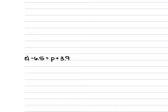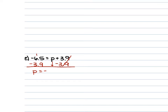For E, we have negative 6.5 is equal to P plus 3.9. To get P by itself, we subtract 3.9 from each side. P drops down and we do negative 6.5 minus 3.9, which is the same as negative 6.5 plus negative 3.9. Same signs — keep the sign and add the numbers. 5 plus 9 is 14, carry the 1, drop the decimal point, 6 plus 3 is 9 plus 1 is 10. So P is equal to negative 10.4.